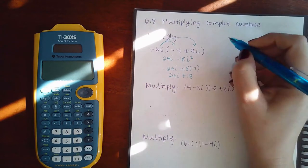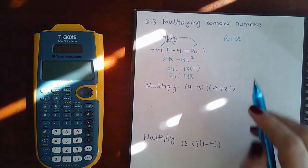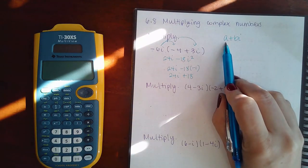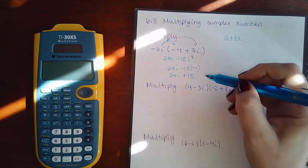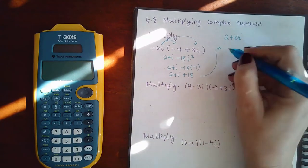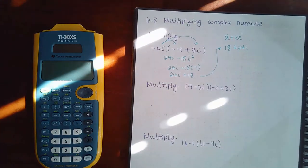Now you'll notice in the directions they always want you to write your answers in this form: the real number part in the front and then the imaginary part in the back. So these two are not in the correct order. I should be writing the positive 18 in the front and then the positive 24i in the back.